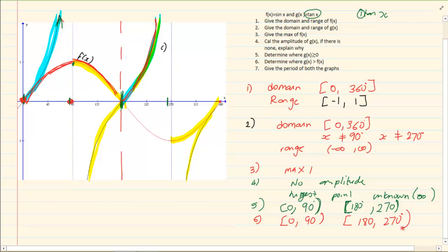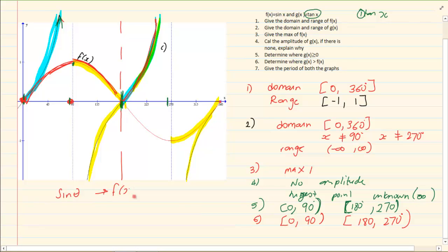The last question asks for the period of both graphs. For f of x, which is sin theta, the period is 360 degrees. For g of x, which is a tan graph, the period is 180 degrees.